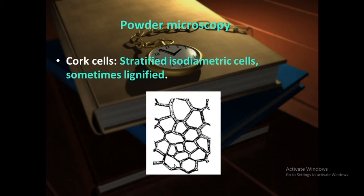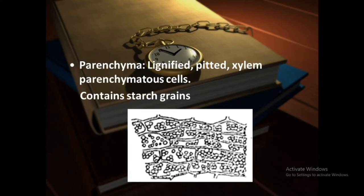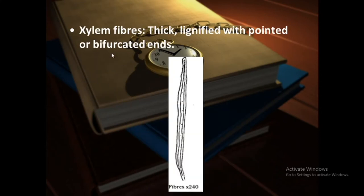Now see the powder microscopy. The powder of Rauwolfia shows different microscopic characteristics. First, cork cells — these are isodiametric cells, sometimes lignified. Second, parenchyma — this is lignified parenchyma, containing xylem parenchymatous cells with starch grains inside them. Third, xylem fibers — these are thick with pointed or bifurcated ends.